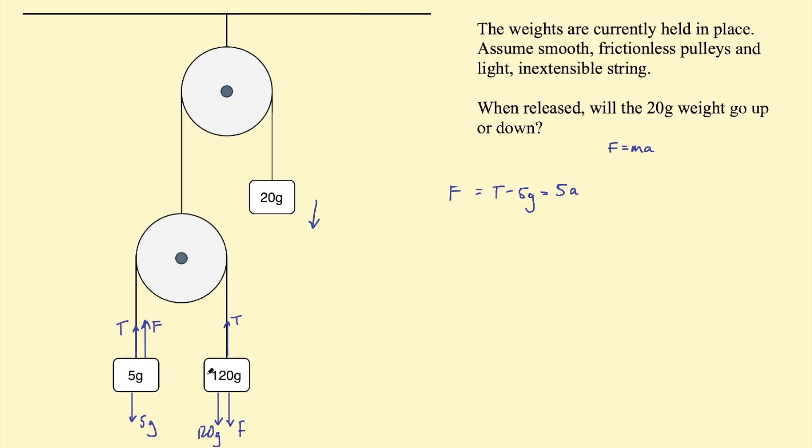The net force on the 120 gram weight, F, will be 120 G in the direction of movement, subtract the tension force in the opposite direction of movement. So subtract T this time. And this equals 120 A. Now A in both equations is the same, because they're going to have the same acceleration, because they're attached by a string.